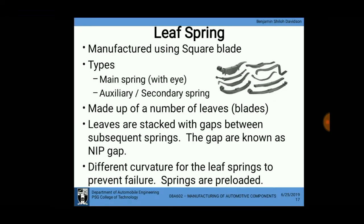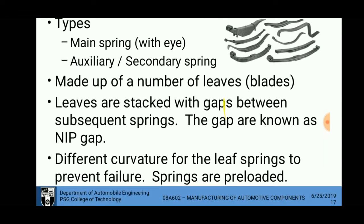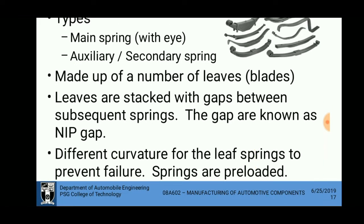The leaf spring is manufactured using a square blade. The types are the main spring, which has an eye, and the auxiliary or secondary spring. A leaf spring is generally made by stacking springs of various curvatures and angles, so that the leaves are stacked with gaps. The gap is called a nipping gap, which gives the complete curved shape.